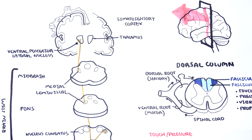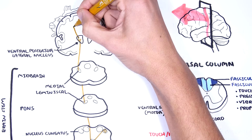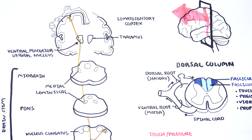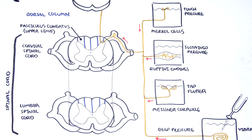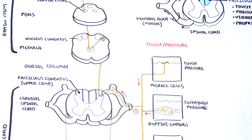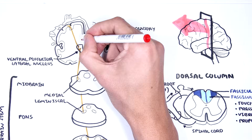The somatosensory cortex is divided into regions that correlate with specific areas of the body, such as the face, hands, and legs. Specific areas of the somatosensory cortex — in this case the hand — respond because this is where the sensory receptors detected something. This ascending system, called the dorsal column or medial lemniscal system, involves first-order neurons, second-order neurons, and third-order neurons.